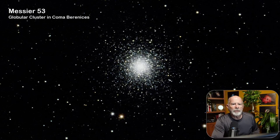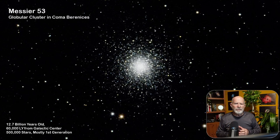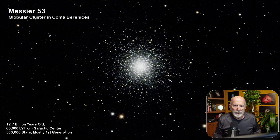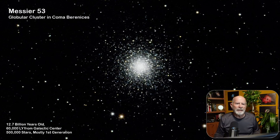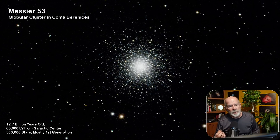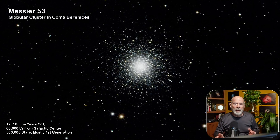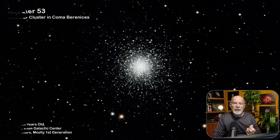M53 in Coma Berenices is one of my favorites — about 12.7 billion years old. It is one of the most outlying globular clusters, being about 60,000 light years from the galactic center and about 58,000 light years from our own solar system, containing about 500,000 stars. This cluster is dominated by first-generation stars containing only the raw elements of the universe, unlike other globulars which are mostly a mix of first and second-generation stars containing light metals from recycled material. In contrast, our Sun is a third-generation star containing heavier recycled elements.